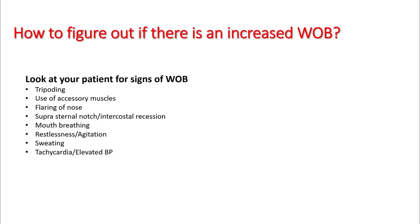To identify increased work of breathing, look at your patient for signs of tripoding, use of accessory muscles, nasal flaring, suprasternal or intercostal recessions, and mouth breathing. The patient will be restless and agitated, sweating, with tachycardia and elevated blood pressure. A simple way to think about it: these patients will look like someone who just climbed a flight of stairs.